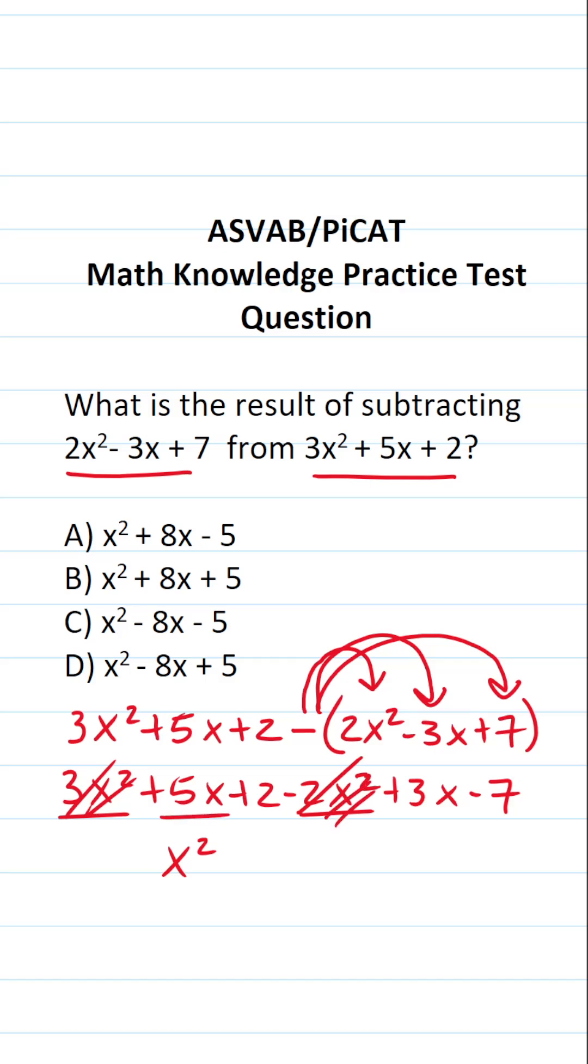Then we have 5x and 3x, which is going to be 8x when we combine them. Then finally, we have 2 and negative 7. 2 minus 7 is going to be negative 5.